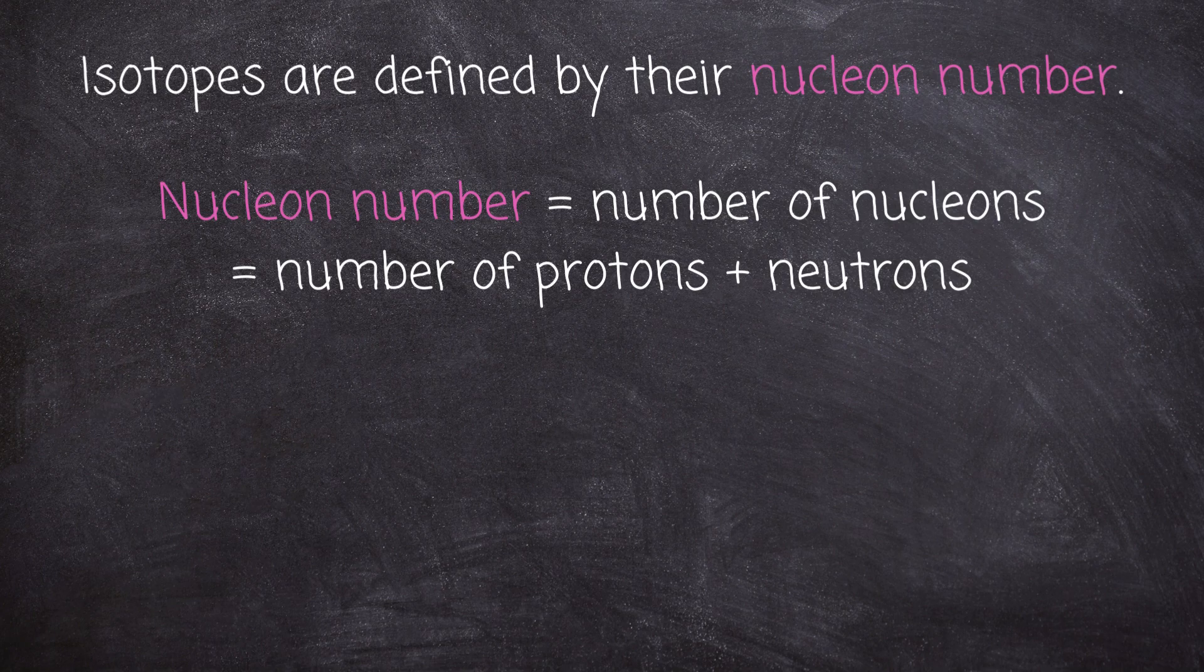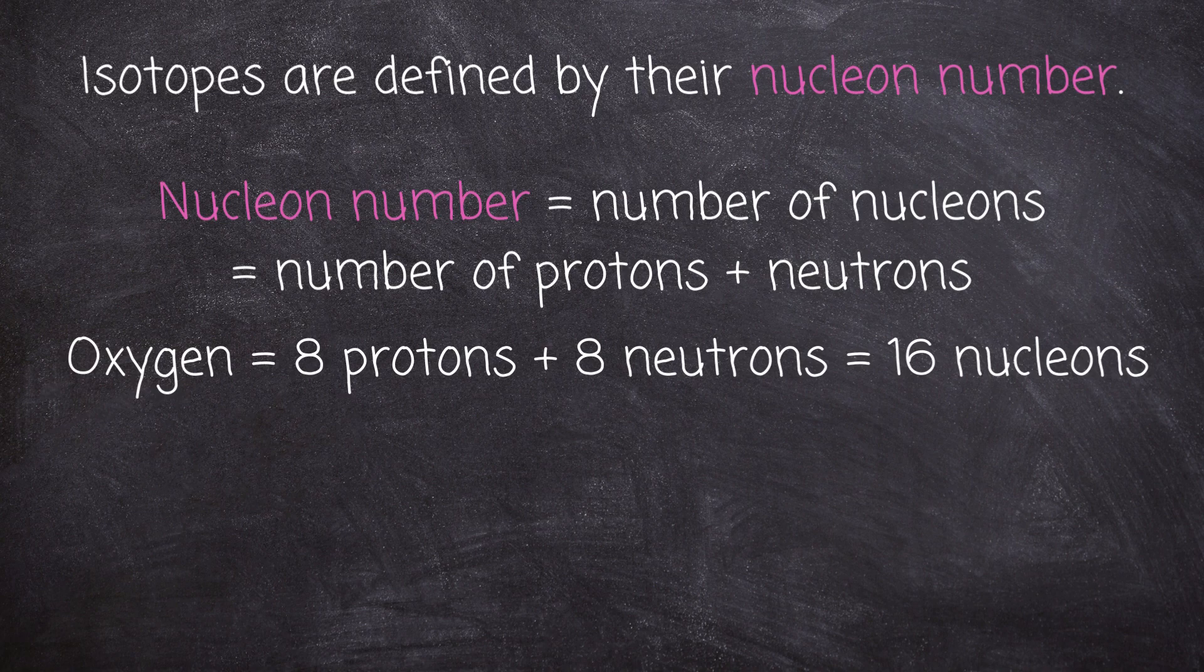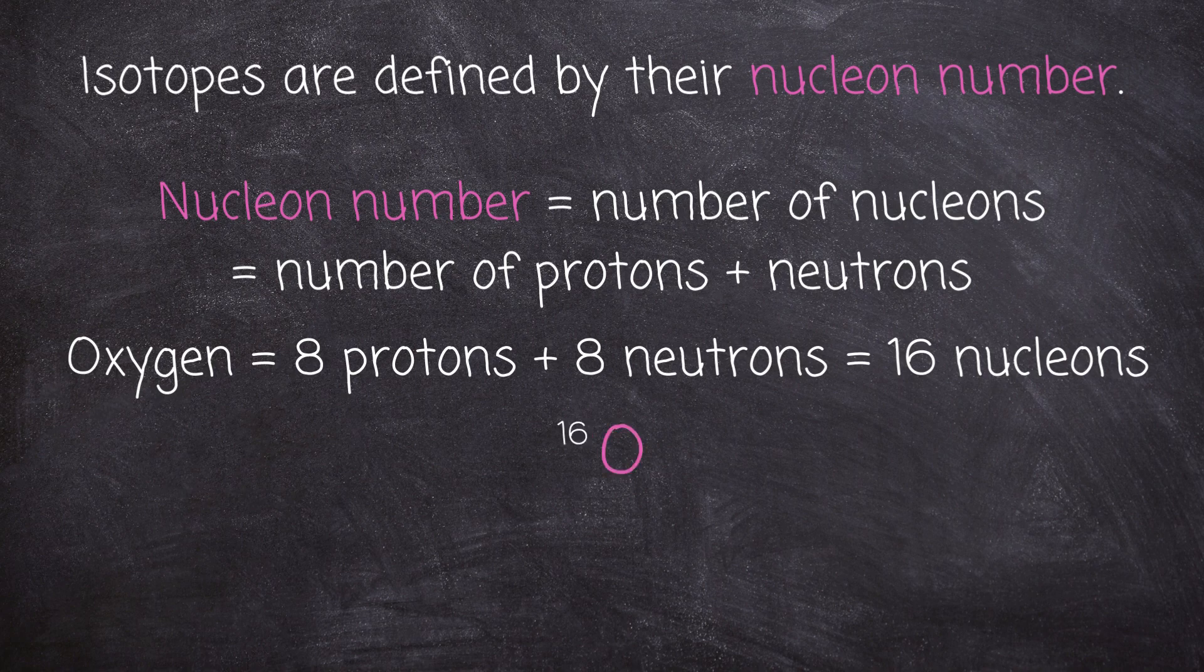Sometimes you will see the nucleon number written as a superscript before the chemical symbol of the element. For example, oxygen has 16 nucleons and is written with the superscript 16 and its chemical symbol, capital letter O. This can also be written as oxygen-16 or O-16.